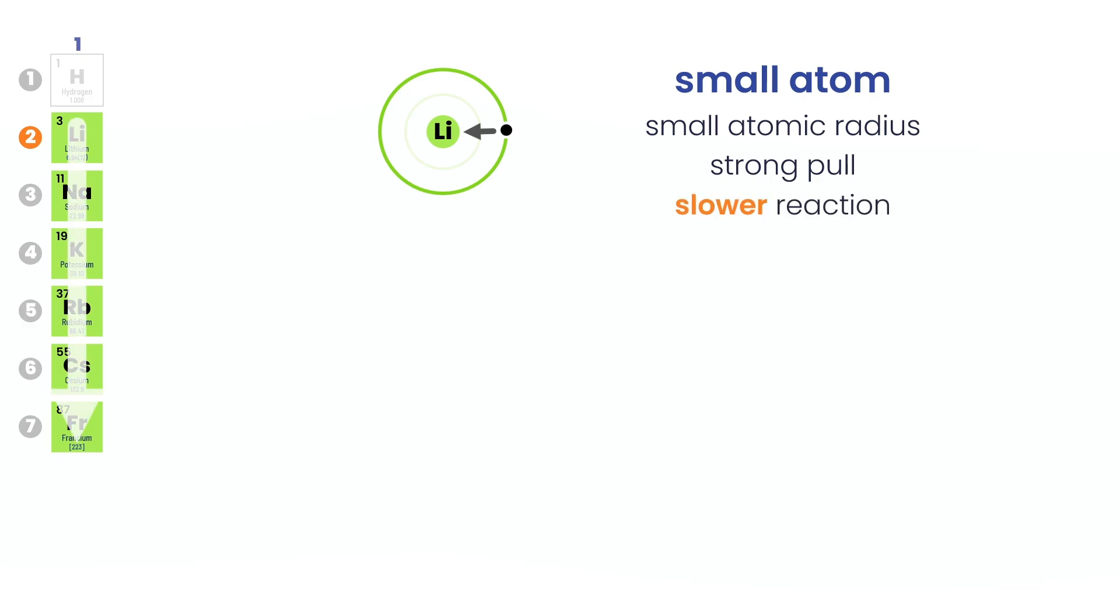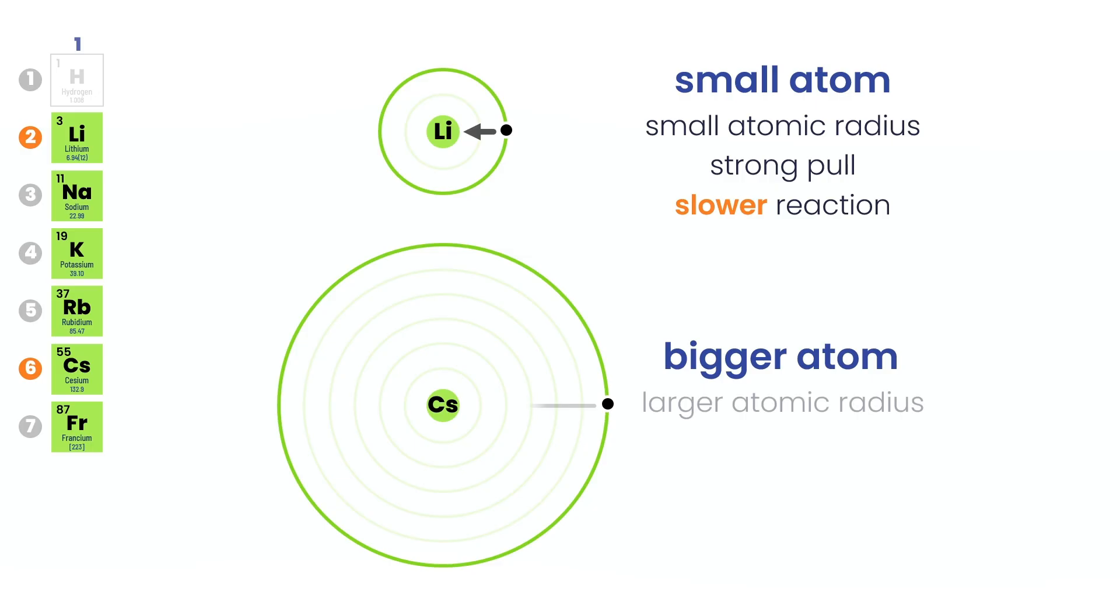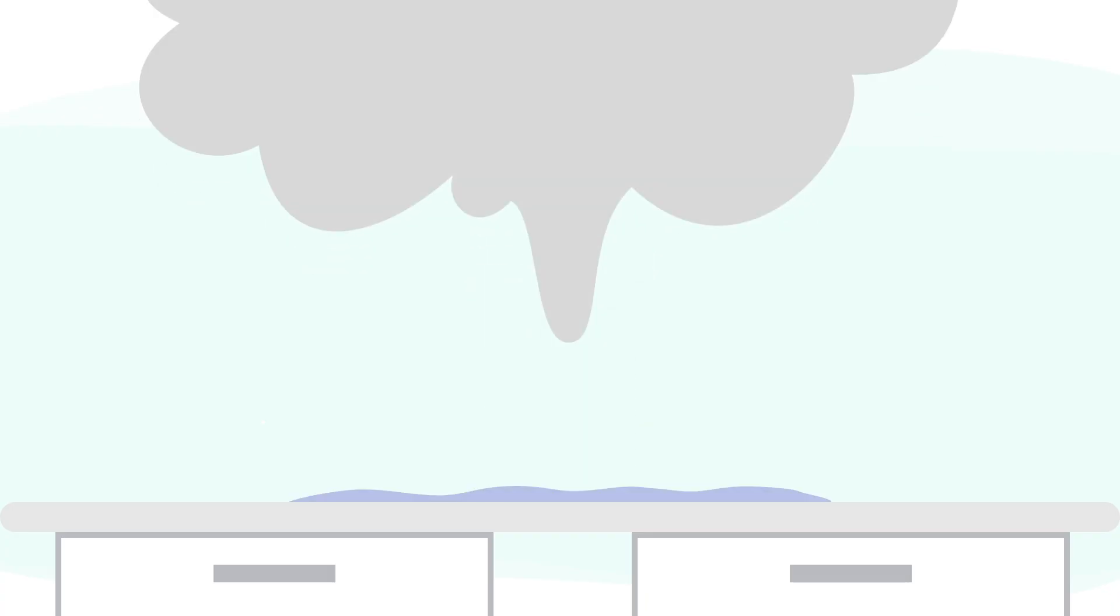But as you move down group 1, sodium to potassium and further, the atoms get bigger. Now, look at cesium. It's a much bigger atom - more shells, more distance, a larger atomic radius. This large radius creates a much weaker pull on that lone outer electron. The nucleus, shielded behind all those layers, can barely hold on. It's easy to lose. Cesium doesn't just lose its electron. It practically ejects it. The result? A violent, instantaneous reaction. The ultimate prize of a weak grip.